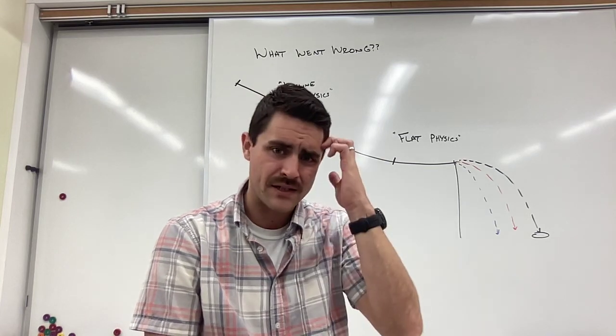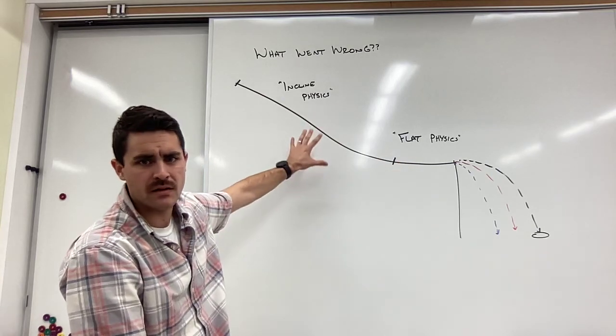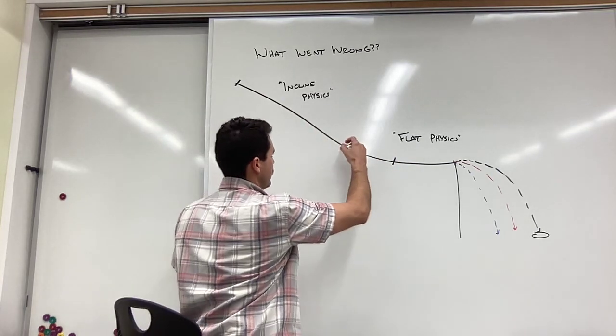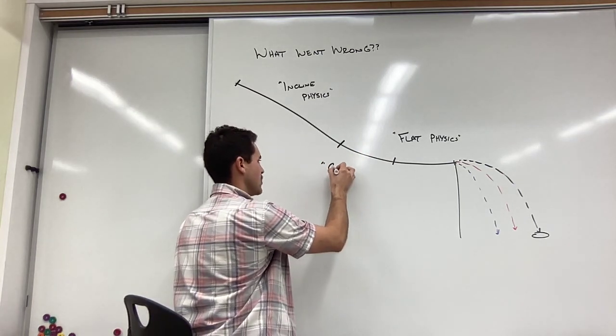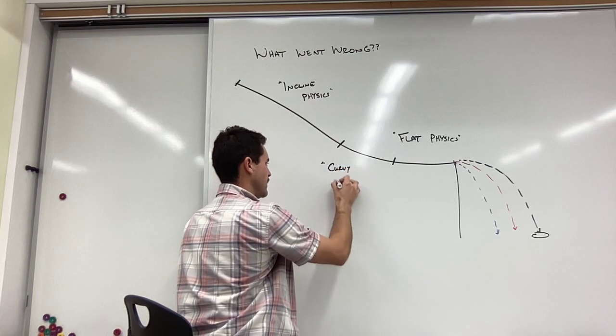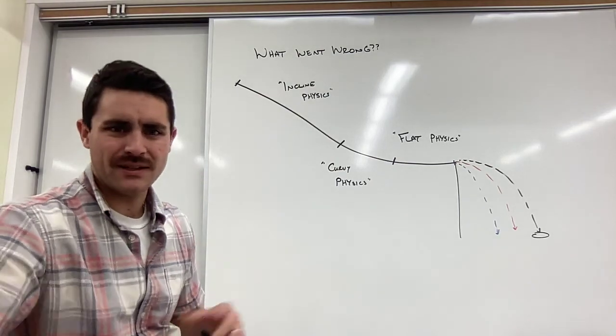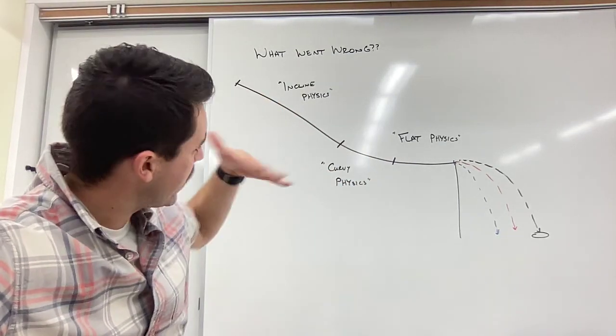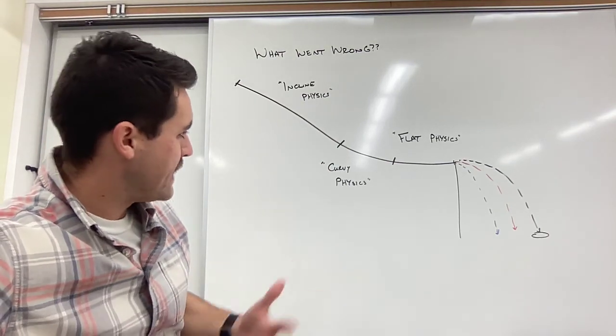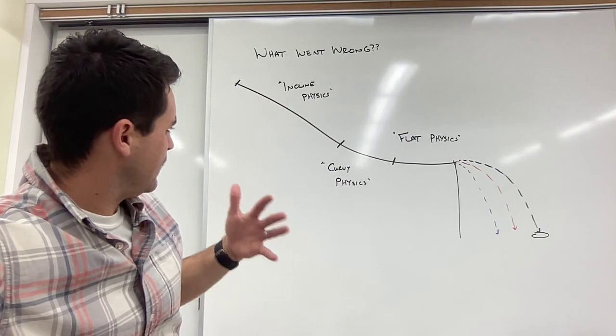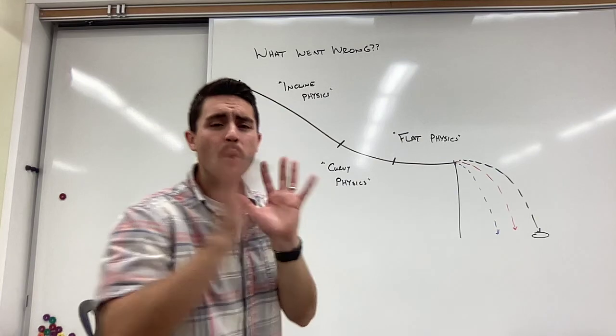So what we landed on was that we don't actually have two sections of physics here. We have this inclined physics, we have this flat physics, and we have this curvy physics. Curvy physics where it's not an angle, it's like a changing angle. And we're not sure what happens there. We're not sure why that section is causing issues, but we know it's not the incline and we know it's not flat physics. We know this to be true.